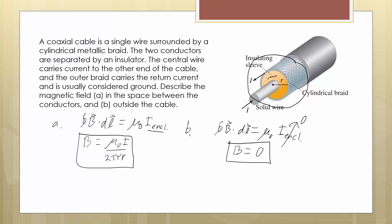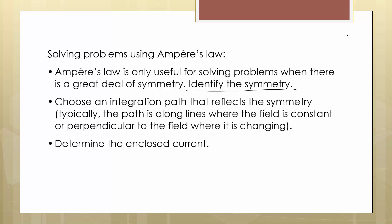If we take the line integral of dL around the edge of our Amperian loop, that gives us the circumference of that loop, which is 2πr. And voilà, we have our expression for the magnetic field due to a current-carrying wire, which is identical to what we've already used — nice and easy when we have a high degree of symmetry.